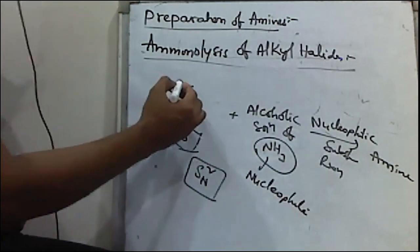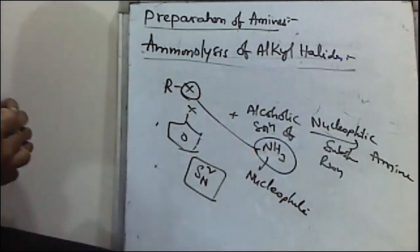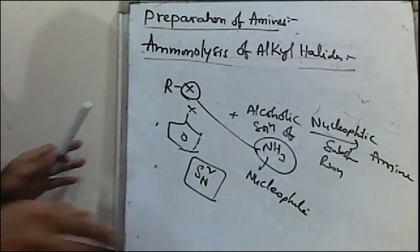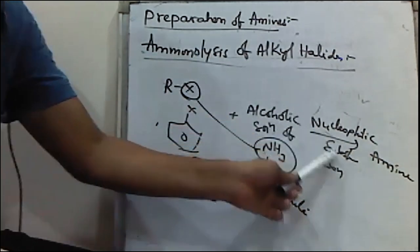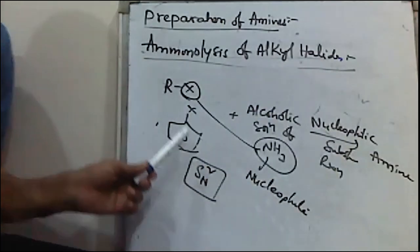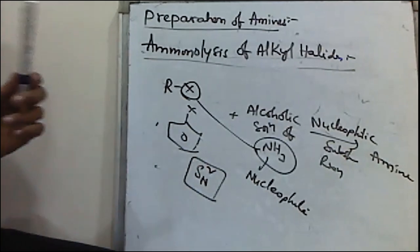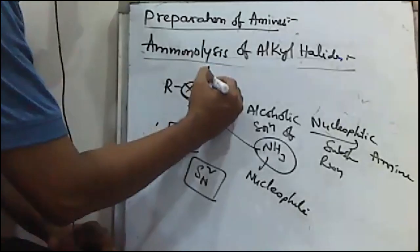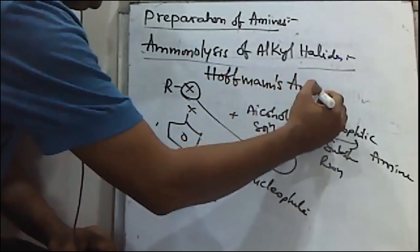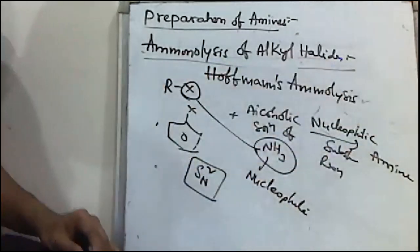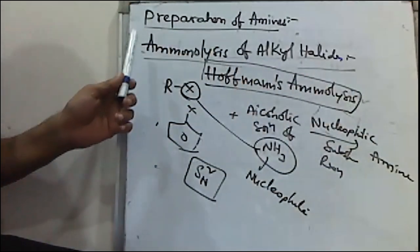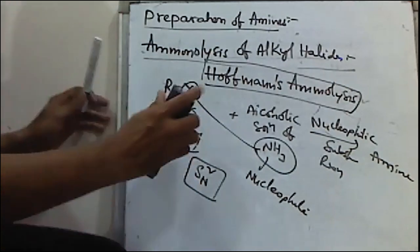In this reaction, the halogen group is replaced with an amine group, and ammonia acts as a nucleophile. This reaction is an example of a nucleophilic substitution reaction and follows an SN2 mechanism. This reaction is also called Hofmann's Ammonolysis.